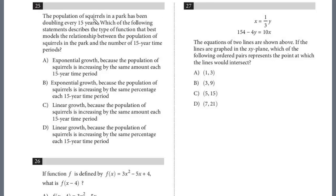The population of squirrels in a park has been doubling every 15 years. Which of the following statements describes the type of function that best models the relationship between the population of squirrels in the park and the number of 15-year time periods? And if you look at the choices, we have to choose between exponential growth and linear growth. These are common questions.